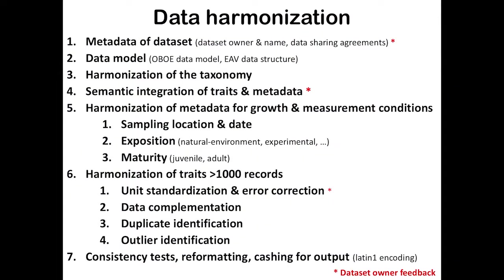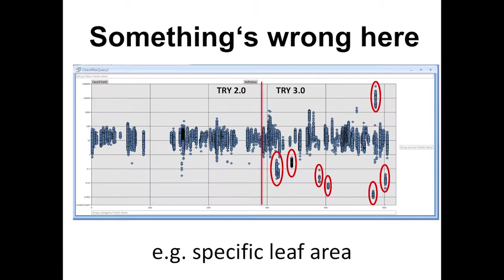Next, we harmonize metadata to characterize growth and measurement conditions — sampling location, sampling date, exposition, and maturity. Then we harmonize traits, not for all traits in the database but for those that have more than 1,000 records. In this context we standardize the units and do some error correction, which is important.